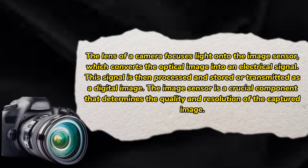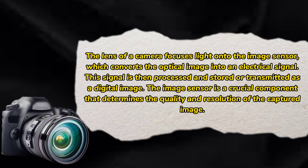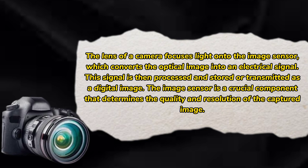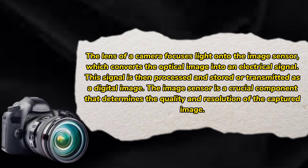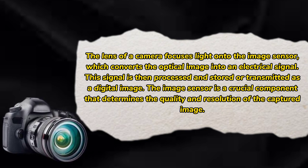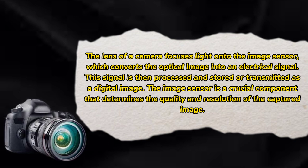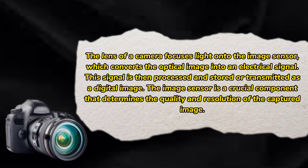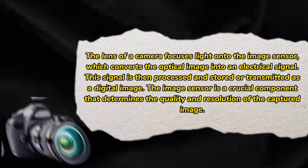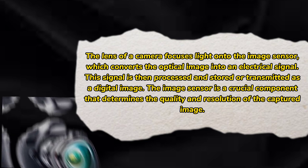The lens of a camera focuses light onto the image sensor, which converts the optical image into an electrical signal. This signal is then processed and stored or transmitted as a digital image.